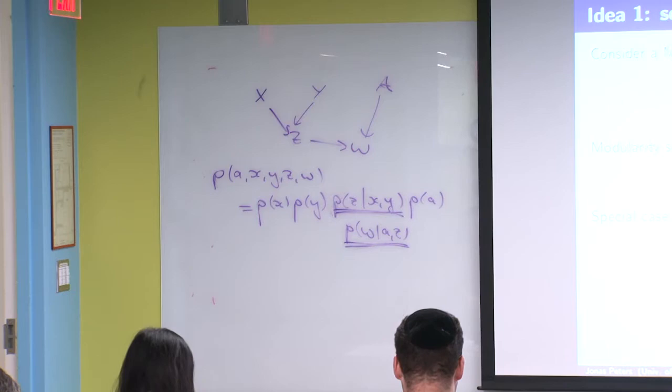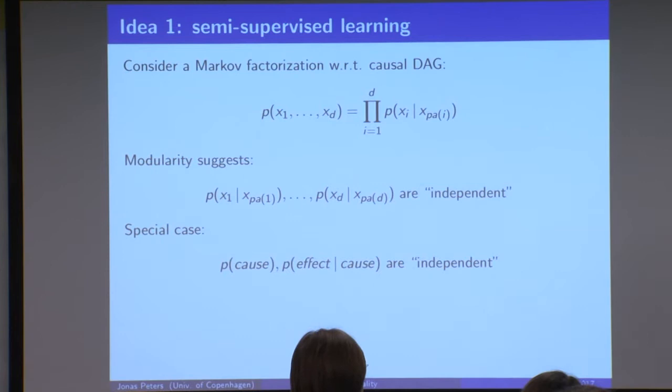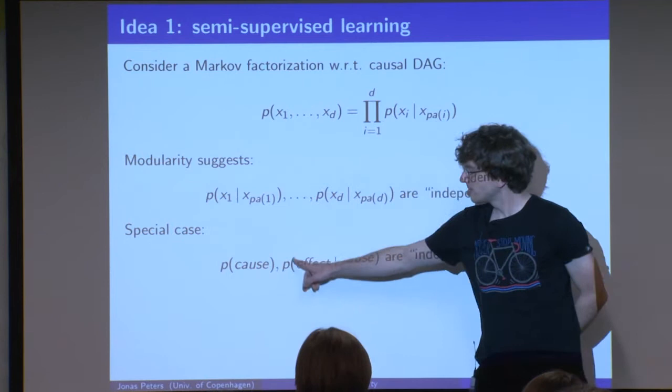If this is true, then it has quite an interesting implication. Imagine you only have two random variables — one cause and one effect. This means that the distribution of the cause is somewhat independent of the conditional distribution of the effect given the cause.